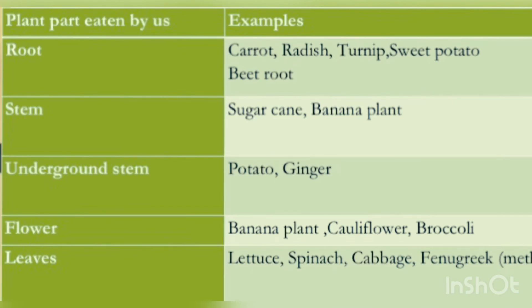Underground stem — examples: Potato, Ginger. Flower — examples: Banana plant, Cauliflower, Broccoli.